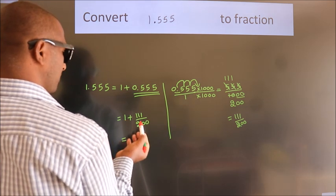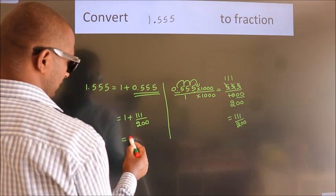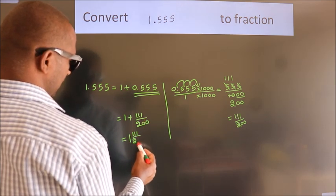1 plus 111 by 200. In mixed fraction it is 1 111 over 200.